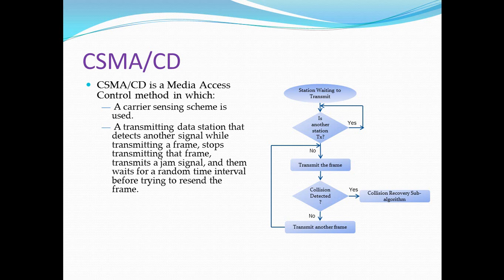However, it is possible for two or more computers to detect the lack of carrier and start transmissions simultaneously. The signals travel at approximately 70 percent of the speed of light and interfere with one another — this interference is called a collision. A sending computer monitors the signal on the cable, and if it differs from the signal it is sending, a collision has occurred and the computer stops transmitting.